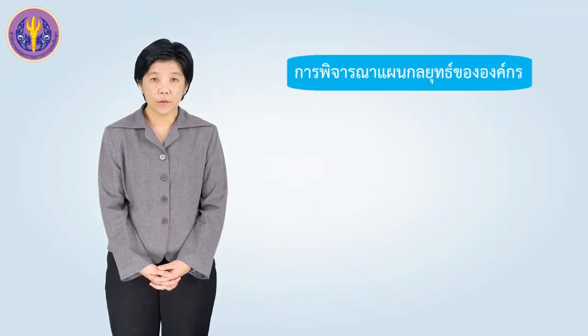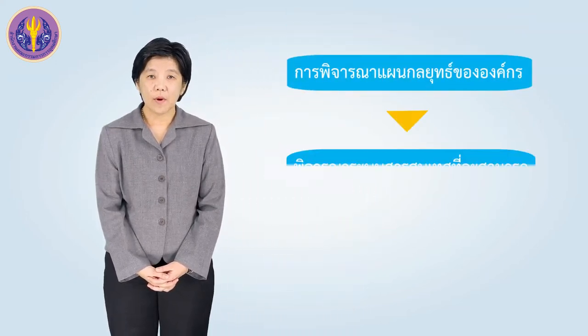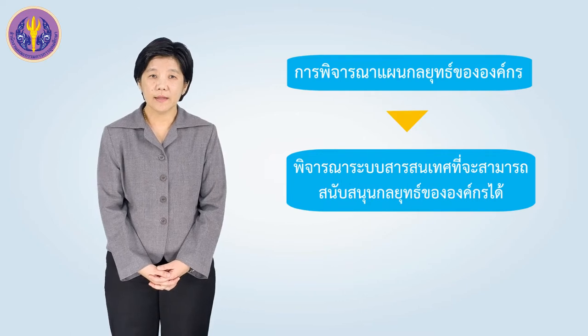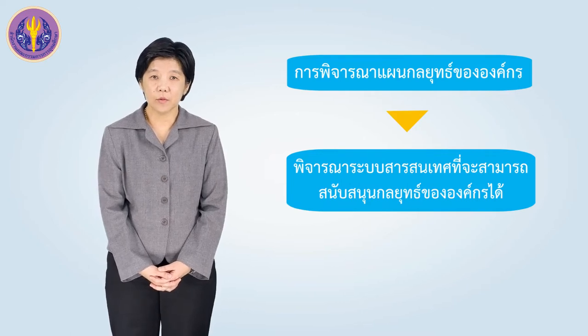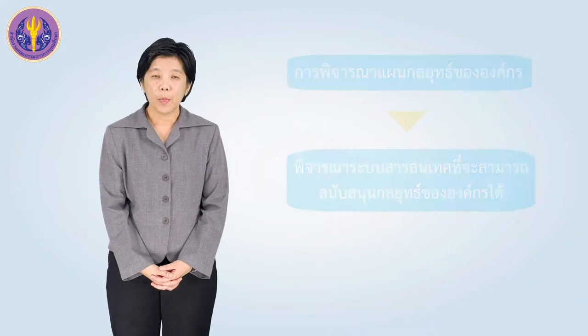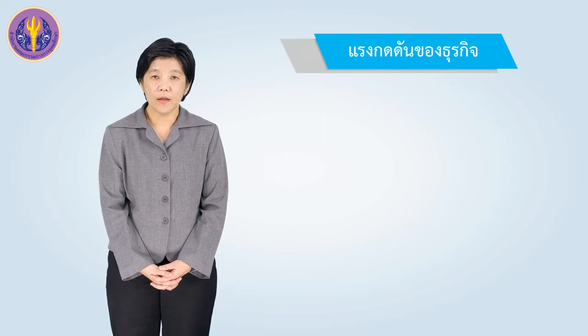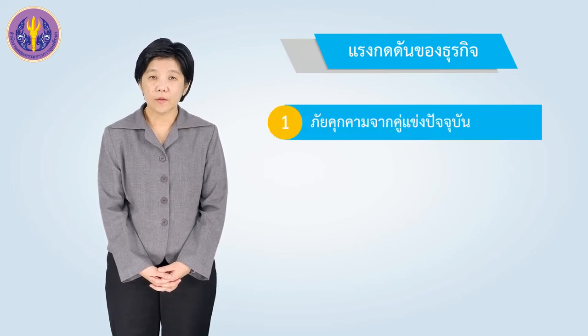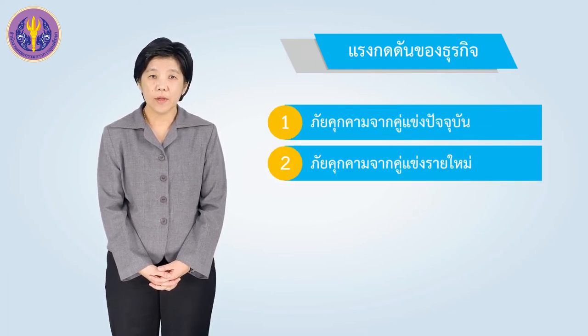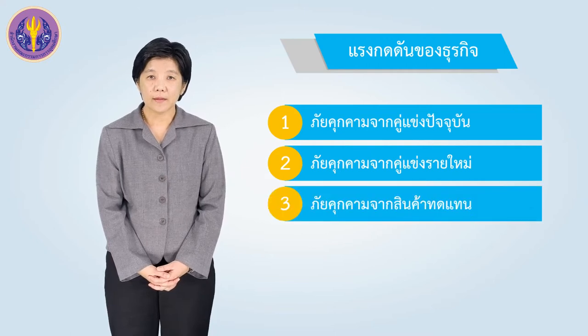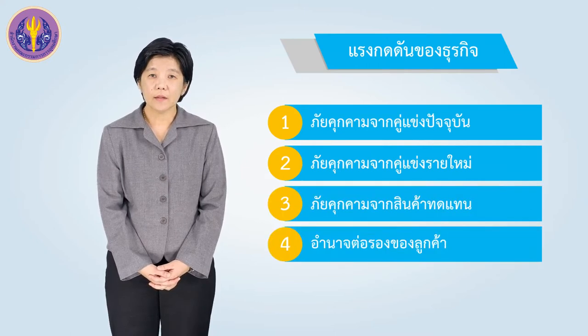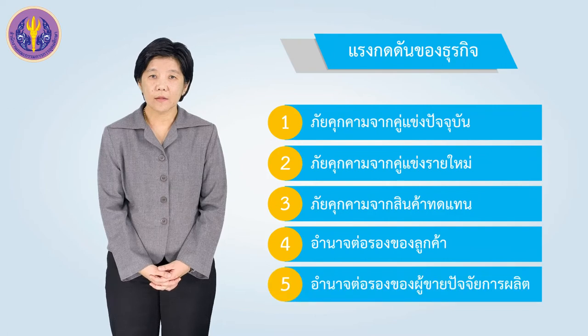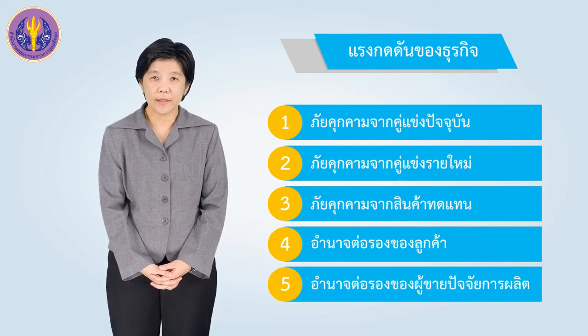ปัจจัยสำคัญที่ทำให้องค์กรสามารถเลือกระบบสารสนเทศได้เหมาะสมกับรูปแบบการทำงานของตนนั้น คือการพิจารณาแผนกลยุทธ์ทางธุรกิจ และพิจารณาว่าจะมีระบบสารสนเทศใดที่จะสามารถไปสนับสนุนกลยุทธ์ได้ โดยใช้ Porter's Five Forces ประกอบด้วย การแข่งขันจากคู่แข่งรายใหม่ สินค้าทดแทน อำนาจต่อรองของลูกค้าและผู้ขาย และปัจจัยการผลิต (The key factor enabling organizations to select appropriate information systems is considering the business strategy plan and which IT systems can support it, using Porter's Five Forces: new entrants, substitute products, bargaining power of customers and suppliers, and production factors.)